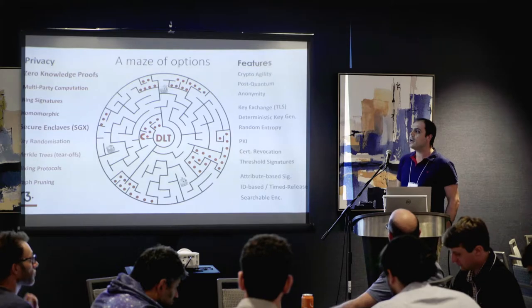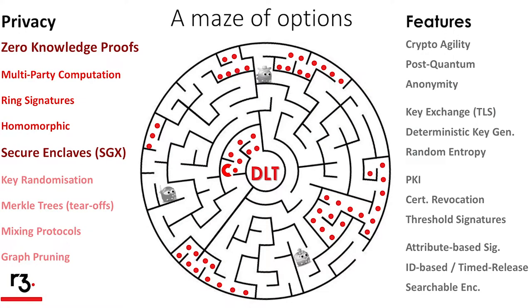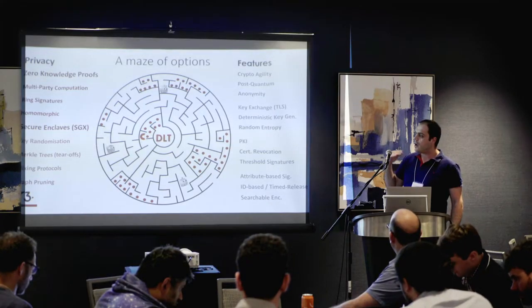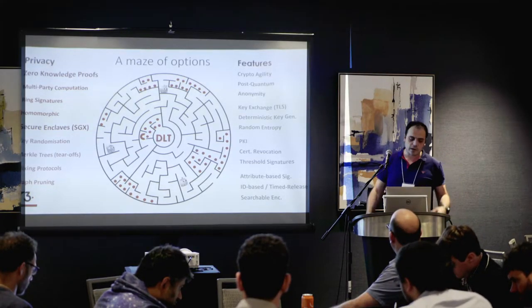Other options include multi-party computation, ring signatures, and some homomorphic encryption. We use Merkle trees and tear-offs over Merkle trees — partial Merkle trees — and some mixing protocols, because the IP address also matters. It's not only about hiding who is behind an address cryptographically; we also have to hide the sender itself. We also use graph pruning: because transactions are sent only between the parties involved in previous paths, we sometimes prune the graph so there is no trace to earlier transactions.